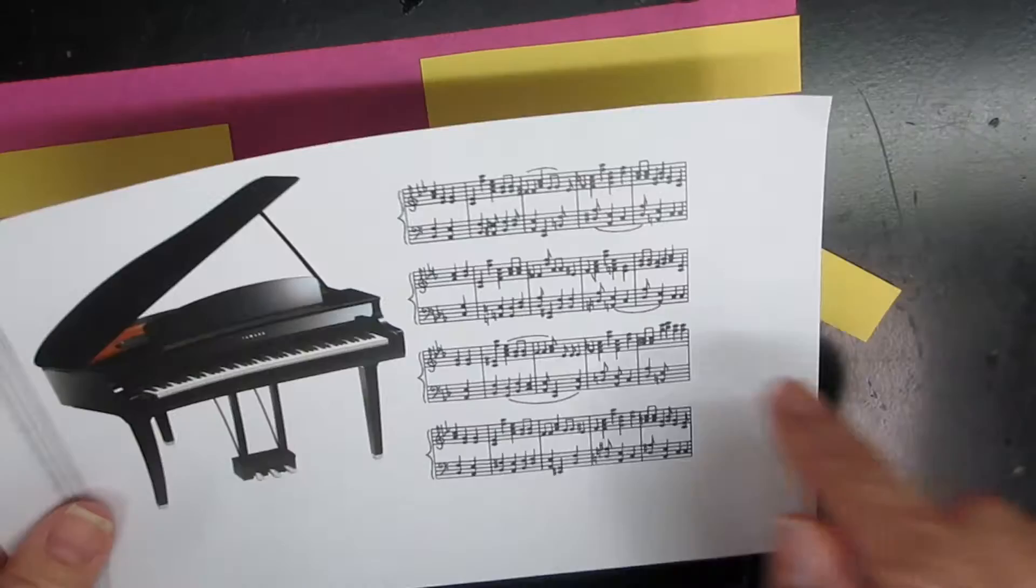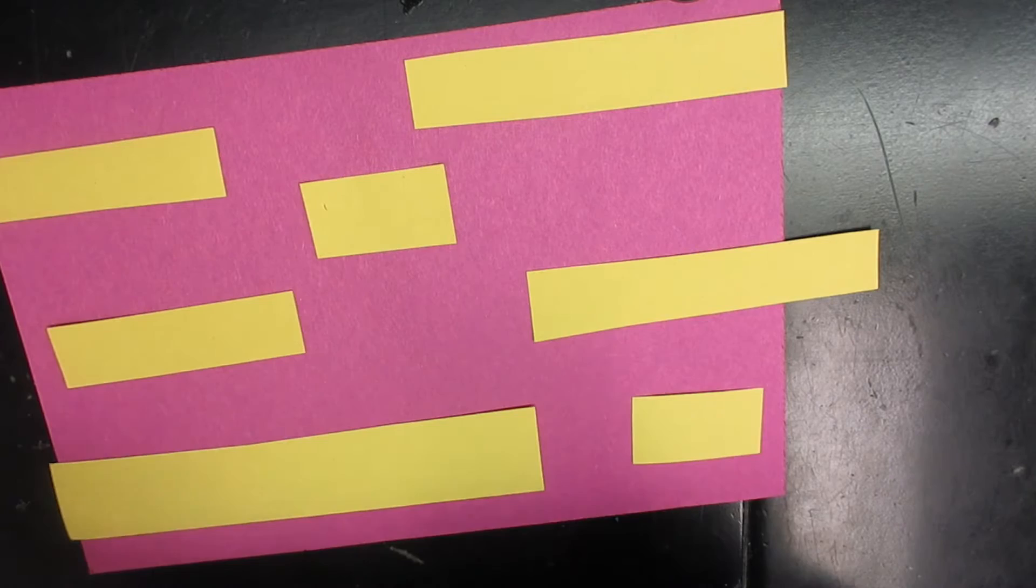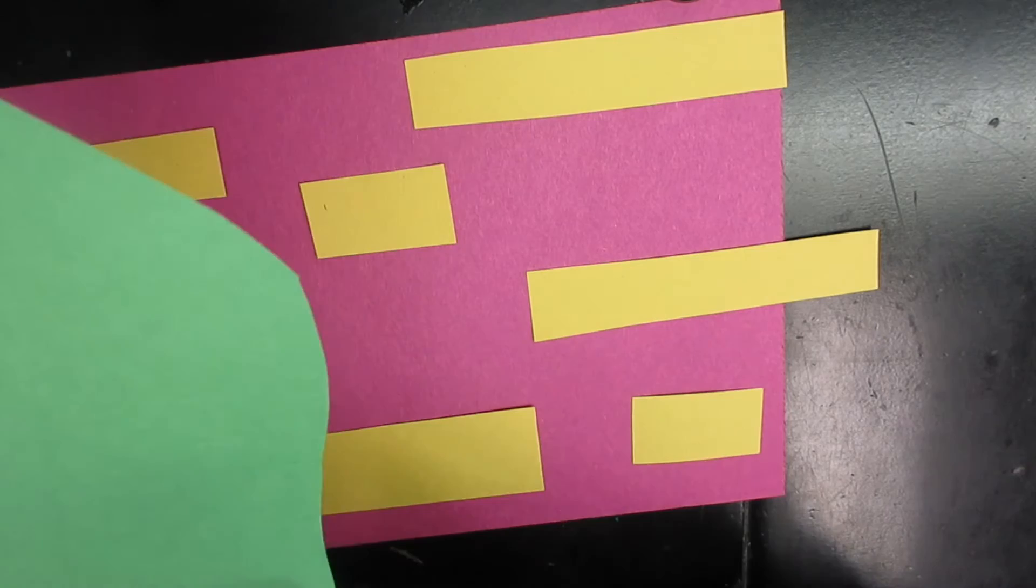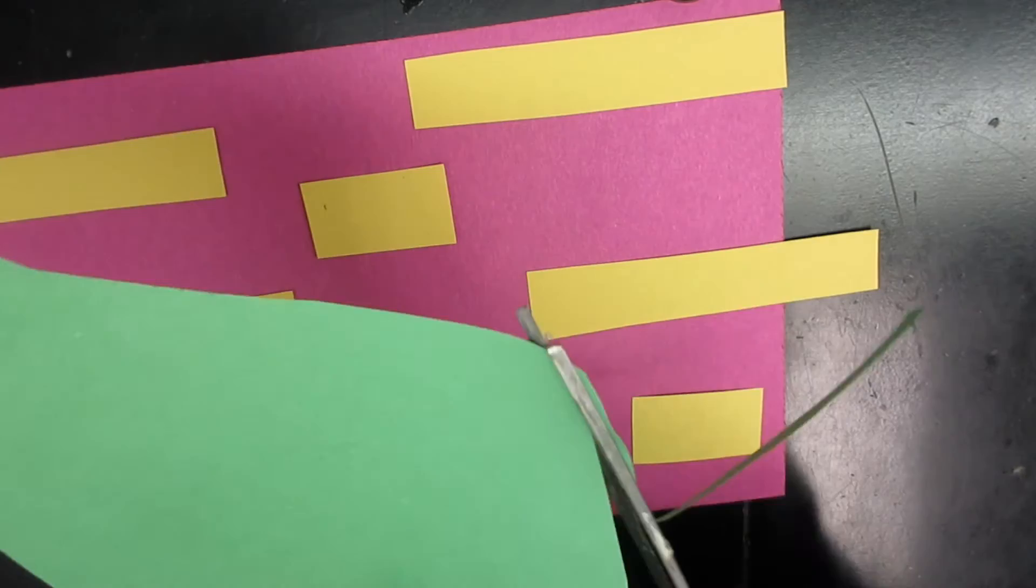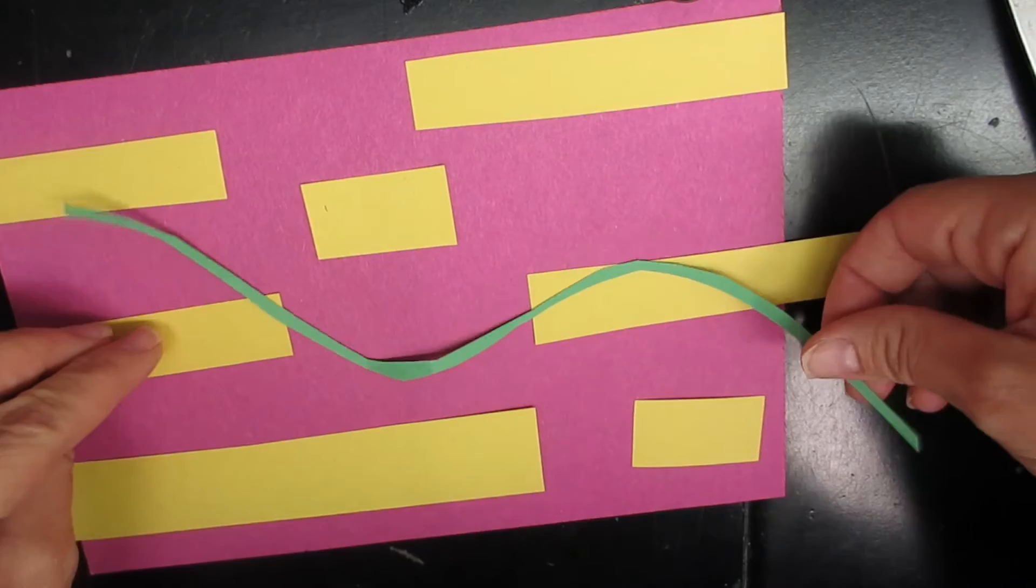The next thing I want to make is the music staff. One, two, three, four, five lines make up a music staff. I want to capture the movement of the music so I'm going to cut my lines wavy. So I had already cut a curve into my green paper and I am using that curve so I can cut out my five musical staff lines.